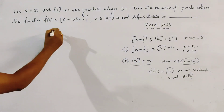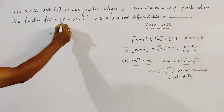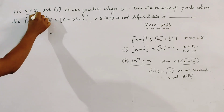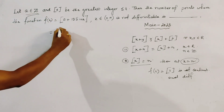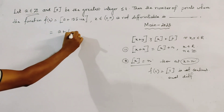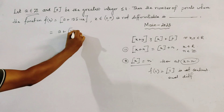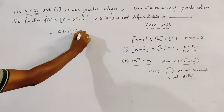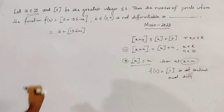Now from the given function, it is clear that A is an integer, as given. So we can write f(x) as A plus box(13 sin x).